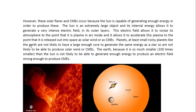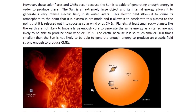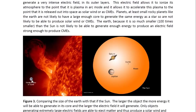Planets, at least small rocky planets like the Earth, are not likely to have a large enough core to generate the same energy as a star, and are not likely to be able to produce solar wind or CMEs. The Earth, because it is so much smaller — about 100 times smaller than the sun — is not likely to be able to generate enough energy to produce an electric field strong enough to produce CMEs. It's all about the size of the object. The Earth is so much smaller than the sun that it cannot operate like the sun does as a star, because it just does not have a large enough reservoir to generate a large enough electric field to produce plasma in arc mode like the sun does.